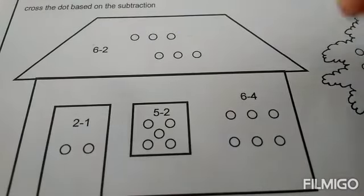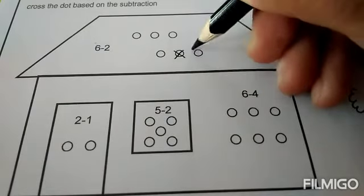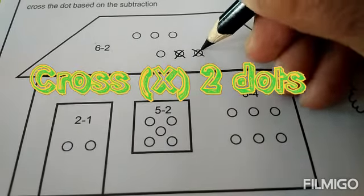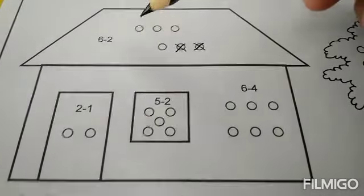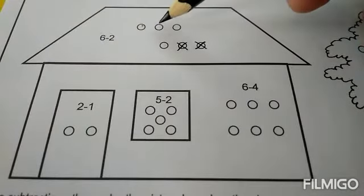Six minus two, so you have to cross two dots like this. Then look at how many dots are left here. Let's count.